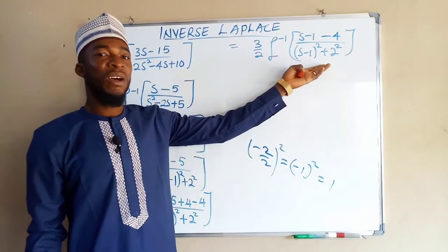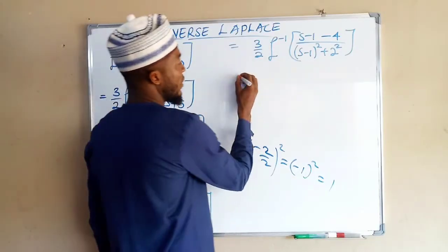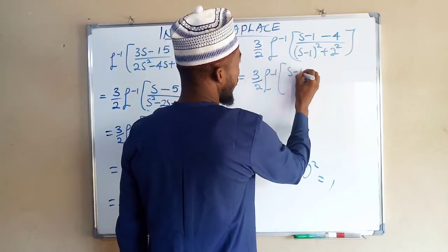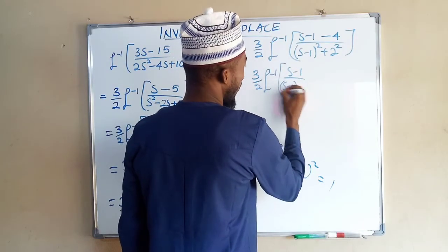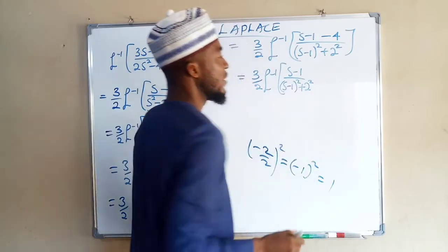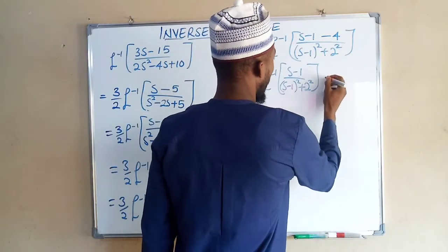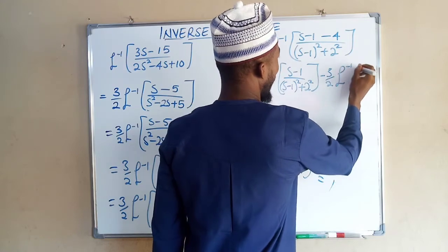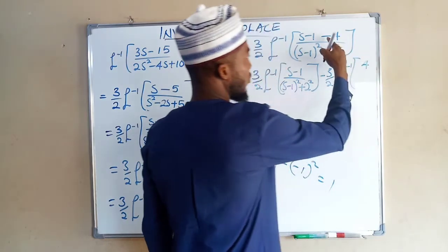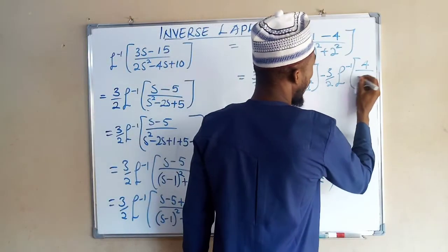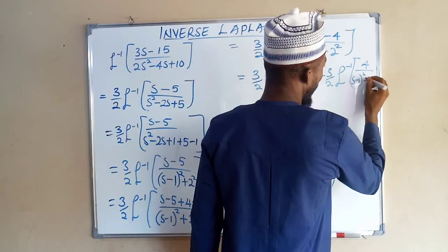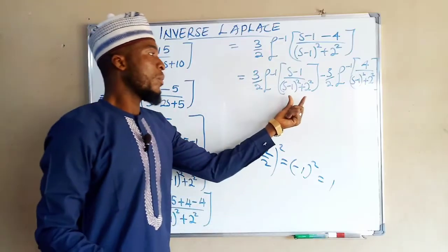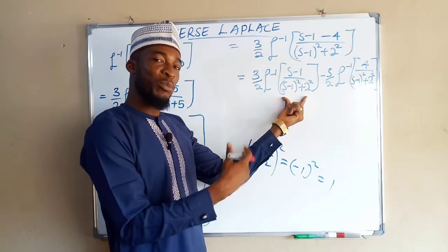We split this into two terms: (3/2) times the inverse Laplace transform of (s minus 1) over (s minus 1)² plus 2², minus (3/2) times the inverse Laplace transform of 4 over (s minus 1)² plus 2². The first term is an exponential multiplied by a cosine function.